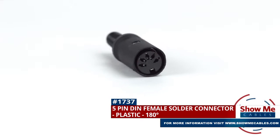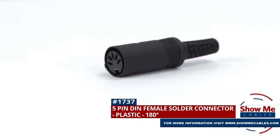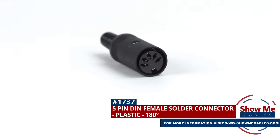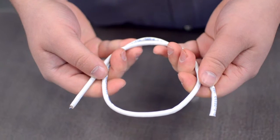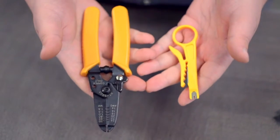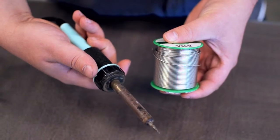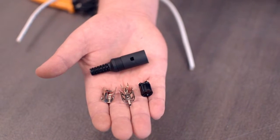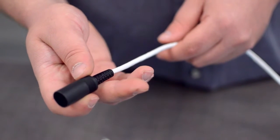This is the 5-pin DIN female solder connector. To install, you will need the following items: low voltage cable, wire strippers, solder and soldering iron, and the DIN connector. Start by inserting the plastic boot over the jacket.